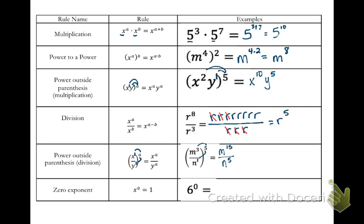Our last rule is zero exponents. Anything at all raised to the zero is just going to be 1.